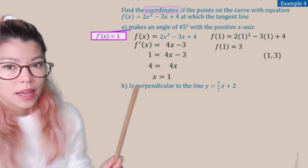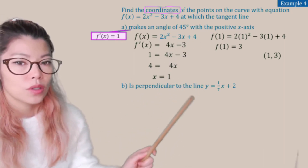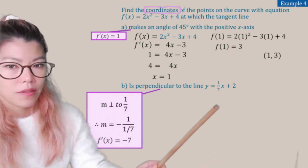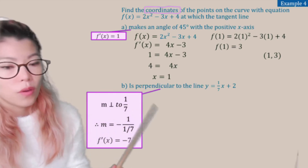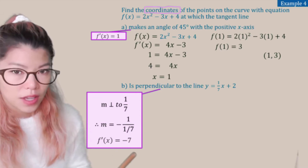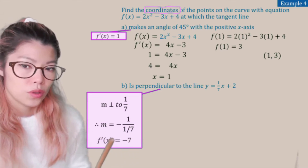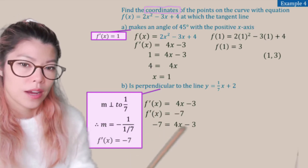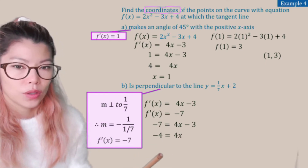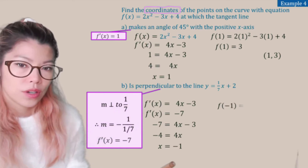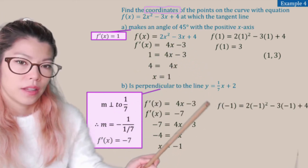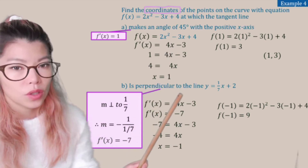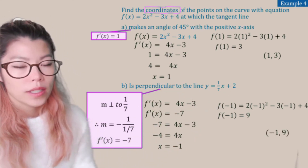For the next part: the tangent line is perpendicular to the line y = (1/7)x + 2. When we say perpendicular, the gradient is the negative reciprocal — so negative 1 divided by (1/7) equals negative 7. So we set f'(x) = 4x − 3 equal to negative 7. Solving: 4x = −4, so x = −1. Plugging x = −1 into the original equation gives y = 9. So the coordinates are (−1, 9).